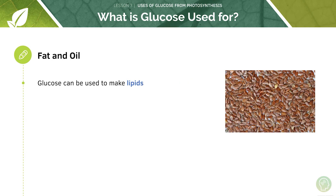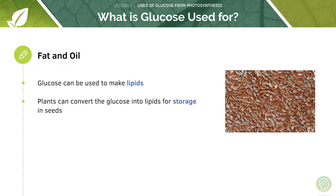Glucose can also be used by plants to make lipids, and plants can convert glucose into lipids for storage in seeds. So notice how glucose can be converted into starch for storage in the main parts of the plant — the leaves, stem and roots — but plants can also convert glucose into lipids which they store in their seeds.